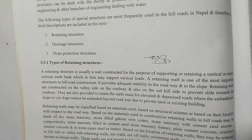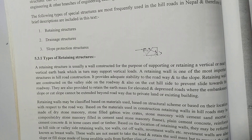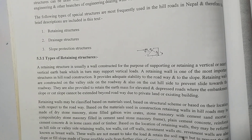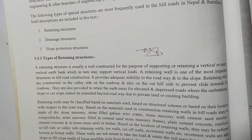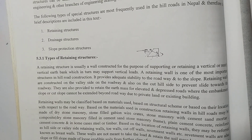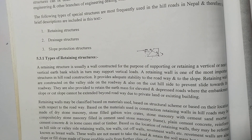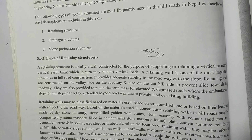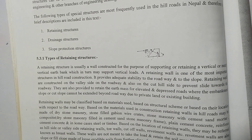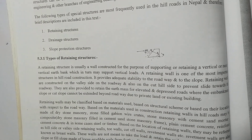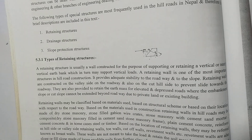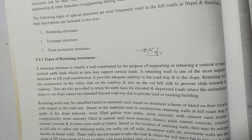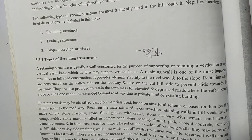Revetment walls, also known as breast walls, are not meant to take load and retain the soil mass, but to prevent the cut slope or fill slope made of loose, erodible soil from the fertile effects of erosion. The thickness of such walls is less than those of retaining walls. These walls slope toward the cut slope or fill slope and are not intended to resist overturning or sliding.